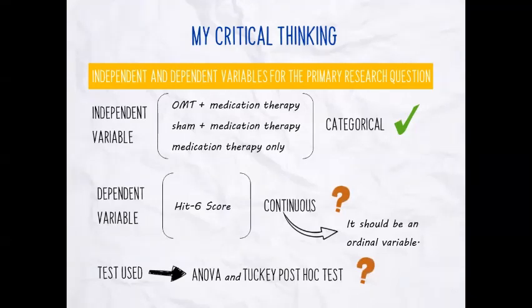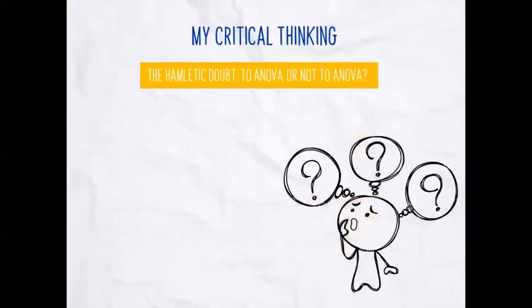Here they considered and converted the ordinal variable into a continuous one, which is why they decided they could use ANOVA. They probably applied the central limit theorem, given the large sample size, so even if the data were skewed, they were allowed to implement a parametric test like ANOVA. However, the Hamlet-like doubt is: to ANOVA or not to ANOVA? Because our dependent variable should be ordinal, but they considered it continuous. I tried to understand — since they didn't explain it — why they decided on ANOVA rather than a non-parametric test.